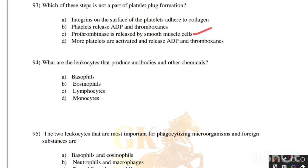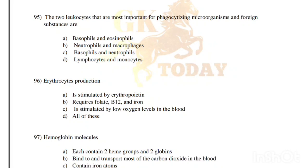What are the leukocytes that produce antibodies and other chemicals? Basophils, eosinophils, lymphocytes, or monocytes — correct answer is option C, lymphocytes. The two leukocytes most important for phagocytosing microorganisms and foreign substances are: basophils and eosinophils, neutrophils and macrophages, basophils and neutrophils, or lymphocytes and monocytes. Correct answer is option B, neutrophils and macrophages.